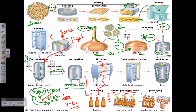Some beers are directly bottled after the filtration step, pasteurized, and ready to be provided to distributors. But some of the beer is taken into flash pasteurization and then placed inside a keg. Kegs are large chambers that act as a reservoir for beer. These kegs are delivered to bars where a large supply of beer is required, rather than individual bottles.